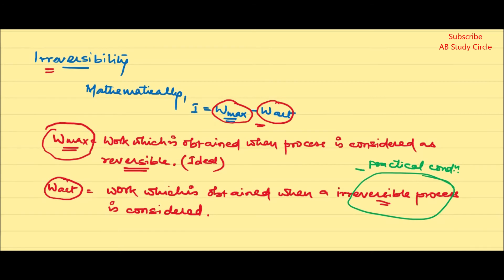Ultimately, irreversibility is the difference between the maximum work — that is, the reversible work — and the actual work.